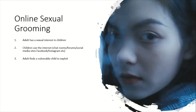A key step is finding a vulnerable child. Young people most at risk of harm online are the same as those vulnerable to risk offline. Risk factors include being involved in the care system, having inadequate parental supervision at home, having mental health issues, being a runaway or frequently absent from school, having very low self-esteem, emotional and behavioural difficulties, and seeking affection in risky places.